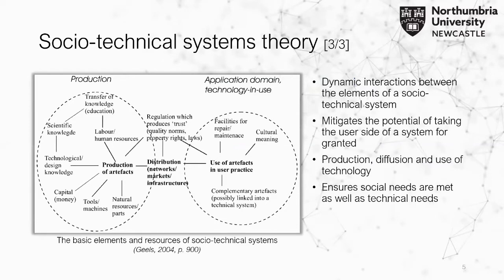Some basic elements of socio-technical systems integrate three different elements: the production of artifacts — which could be the technology or support technology for the built environment — how that technology is diffused throughout the built environment, and then the uses of that technology. Considering how they integrate mitigates the risk of taking a system for granted, and it really focuses on meeting societal needs — using technology not for the sake of using technology, but to deliver a need or deliver good for the built environment and the people that live and operate within it.